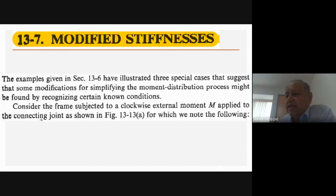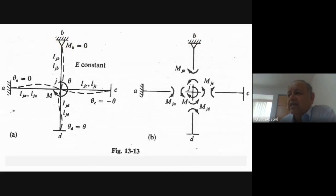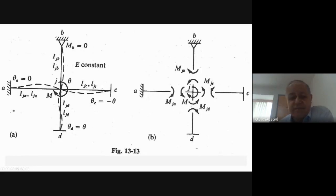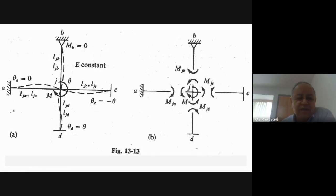Consider, as shown in figure 13.13 part A, that we have one structure with only four members. We apply one moment at joint G, at the center, applied clockwise at joint G. Now, when you have this moment, this moment at joint J is distributed between the ends of the members.